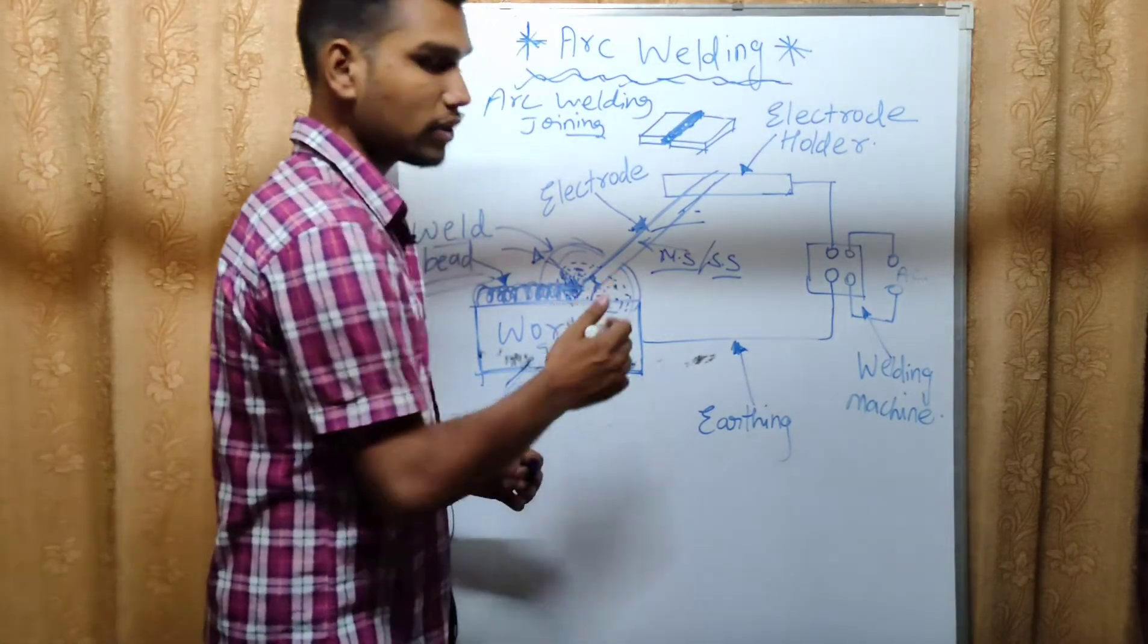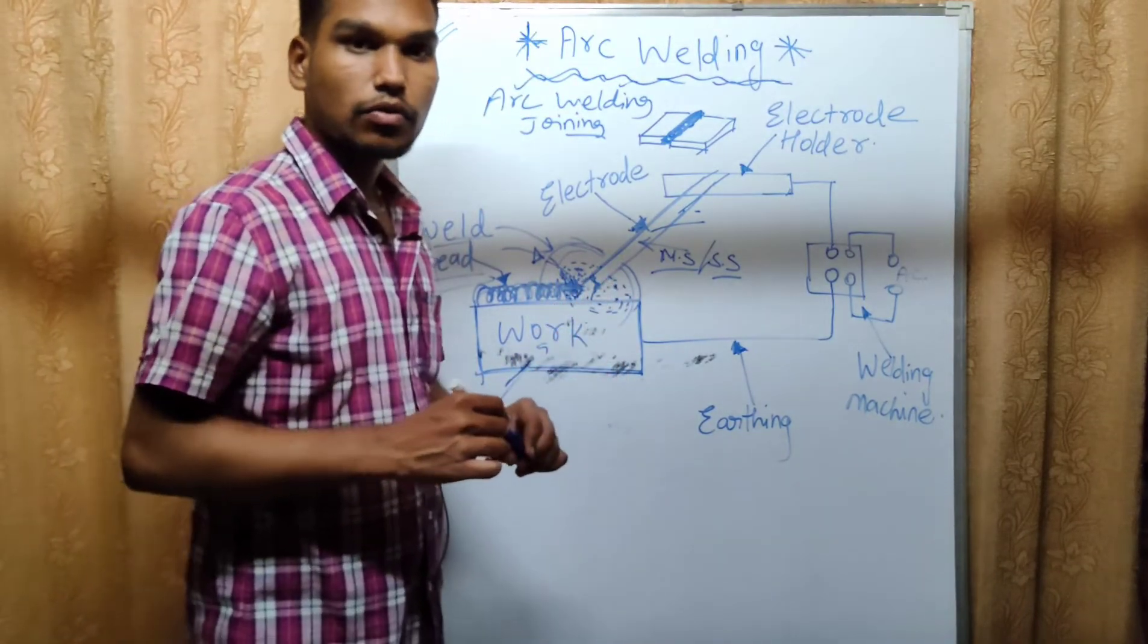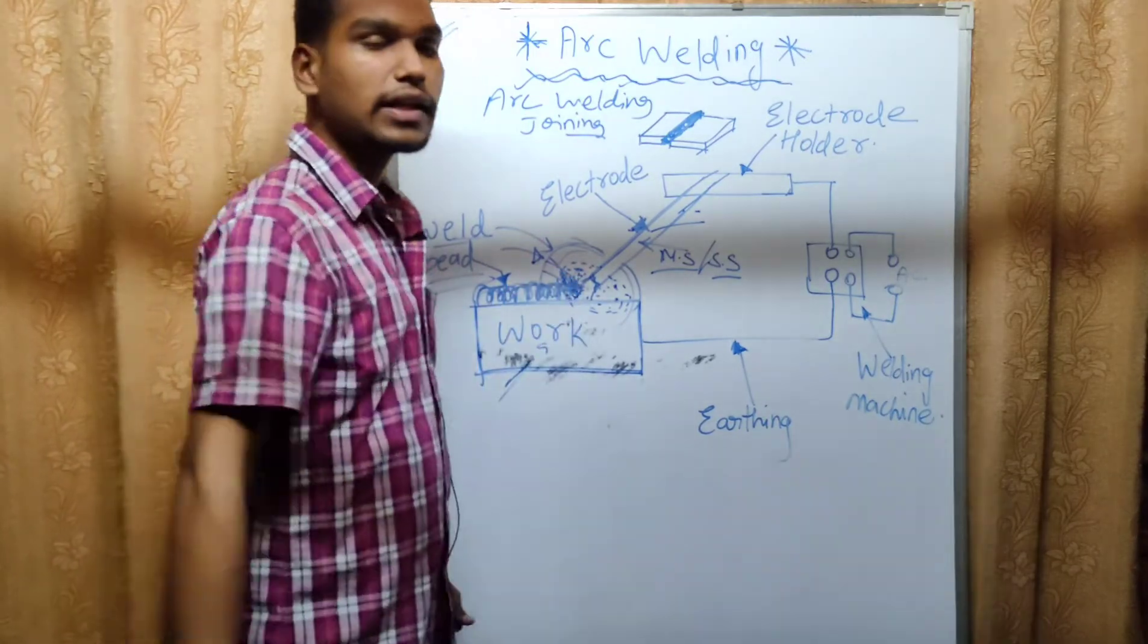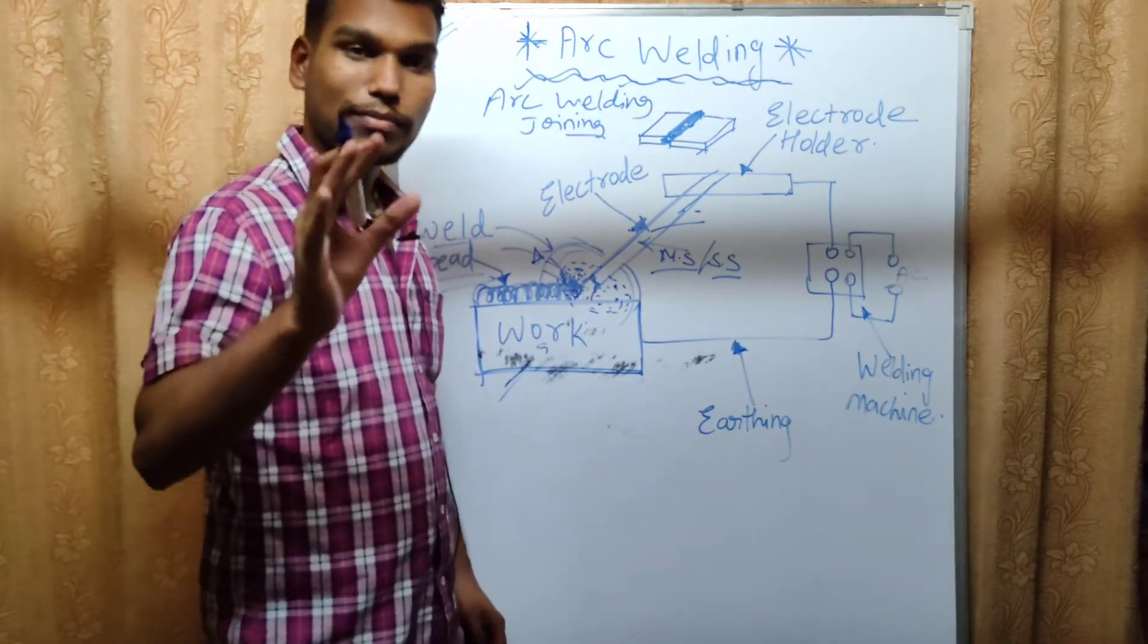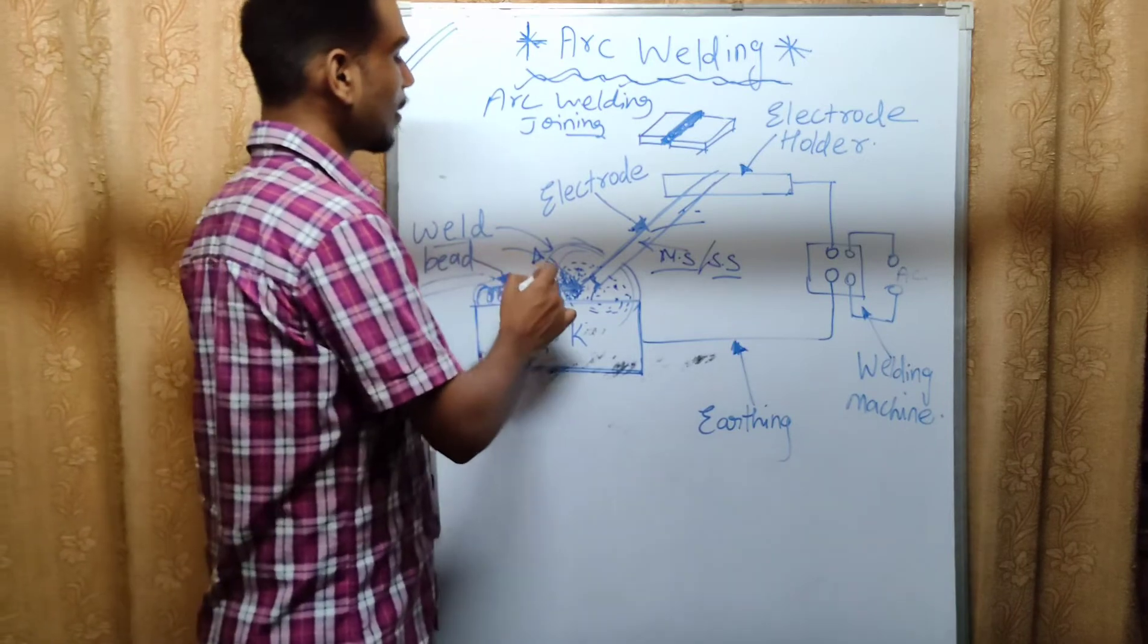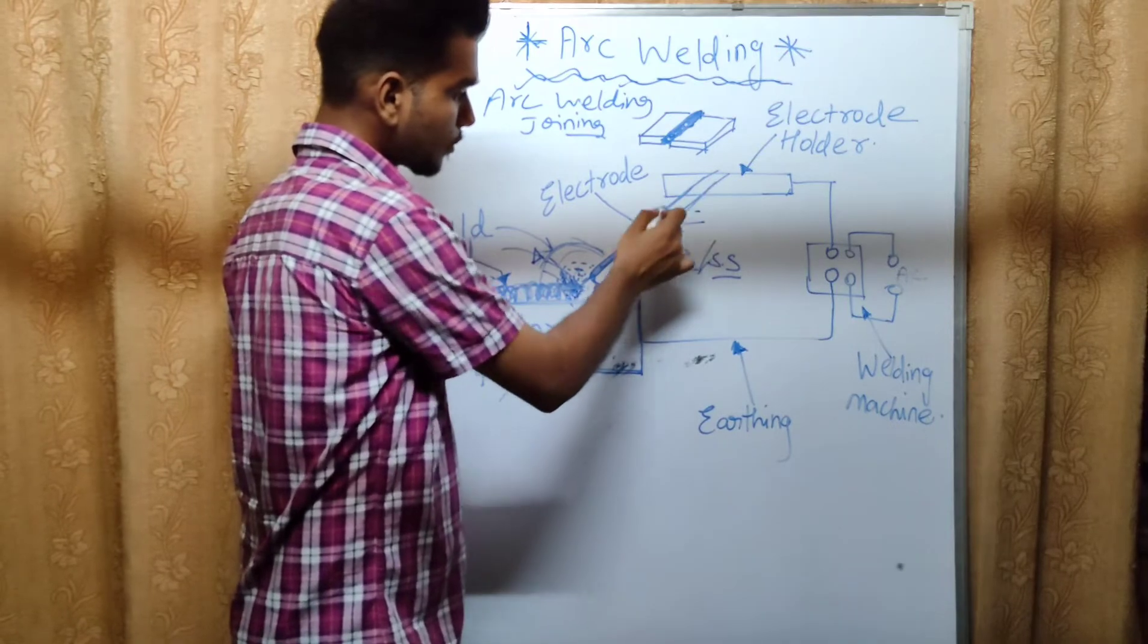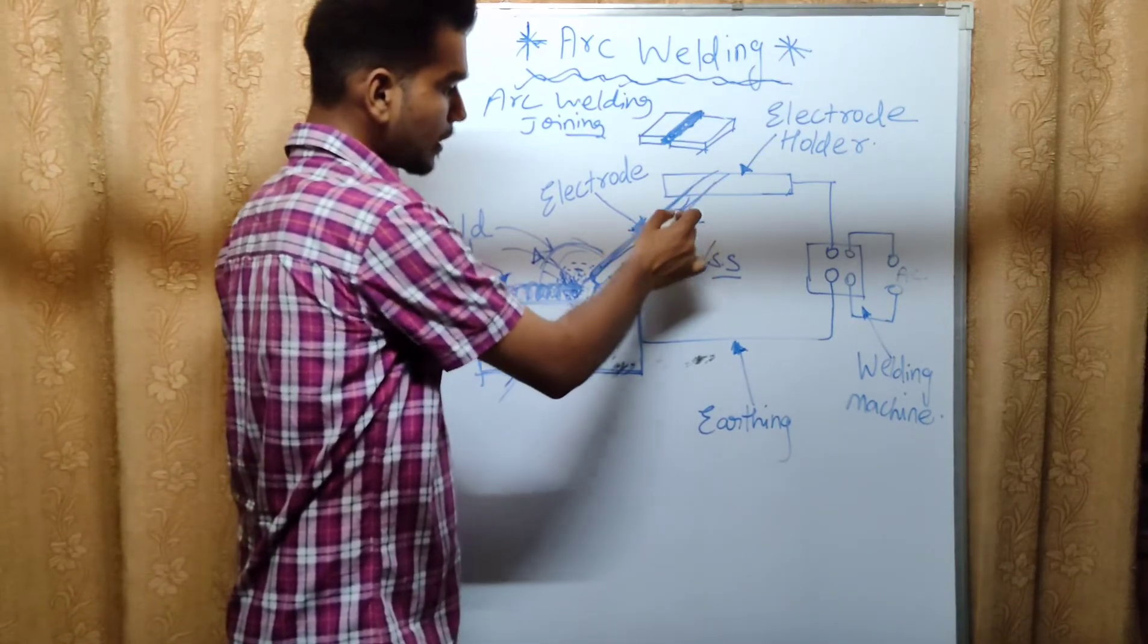What happens if there is flux? If there is contamination that comes in, then the welding will reduce the strength. So this flux on the electrode helps us to save it.